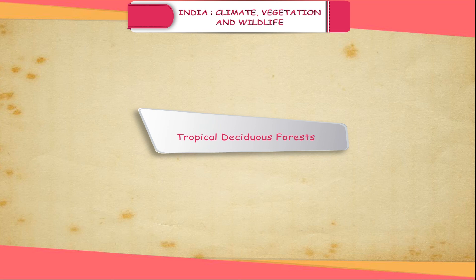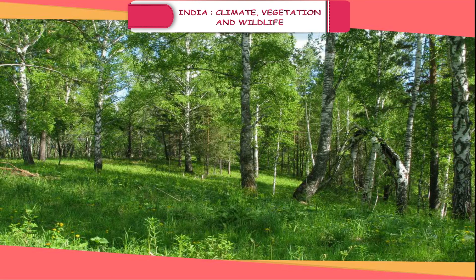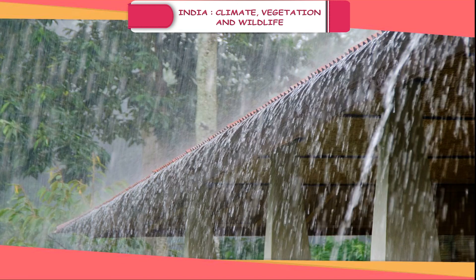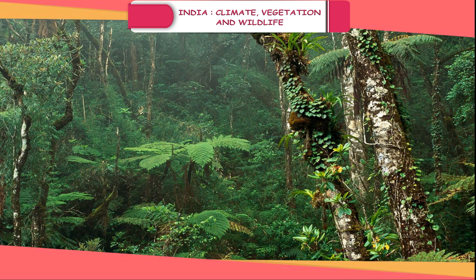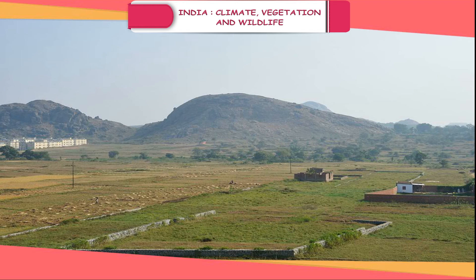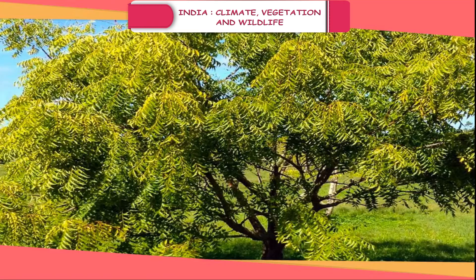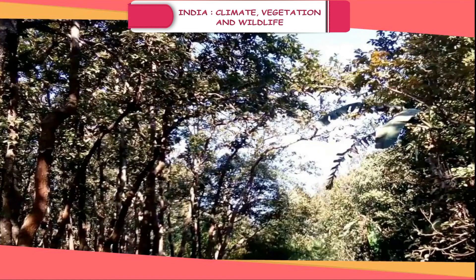Tropical Deciduous Forests: These are also known as monsoon forests. It is the most common type of forest in India. They are found in regions having rainfall between 80 to 200 cm in a year. Because of long dry spells, the trees shed their leaves and grow new leaves in the rainy season. These forests are found in the Chhota Nagpur plateau covering Chhattisgarh and parts of Madhya Pradesh, western parts of Odisha and Jharkhand. The common vegetation includes shisham, teak, mango, neem, babool, sandalwood, sal, etc.